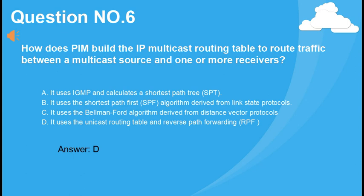How does PIM build the IP multicast routing table to route traffic between a multicast source and one or more receivers? A. It uses IGMP and calculates a shortest path tree. B. It uses the shortest path first (SPF) algorithm derived from link state protocols. C. It uses the Bellman-Ford algorithm derived from distance vector protocols. D. It uses the unicast routing table and reverse path forwarding (RPF). Answer: D.